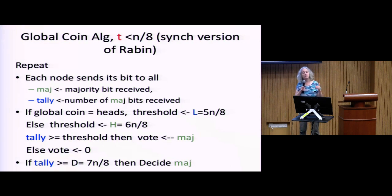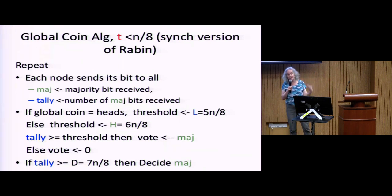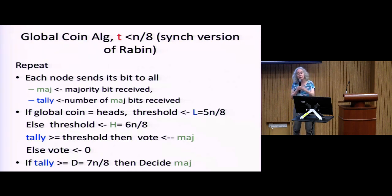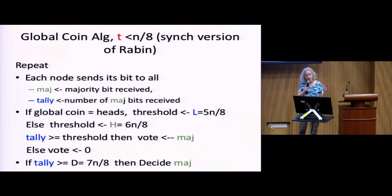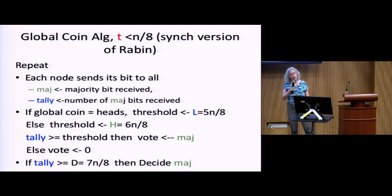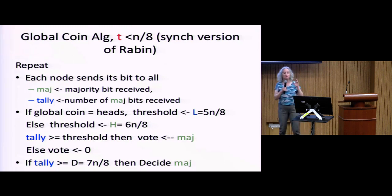If the global coin is heads, you set the threshold to be 5N over 8 — the low threshold. Otherwise you set the threshold to 6N over 8, or three-quarters — the high threshold. You then look at the tally. If it's bigger than the threshold you've set, you set your vote to the majority. Else you set your vote to zero. And if the tally is bigger than yet another threshold — 7N over 8 — then you decide on the majority.